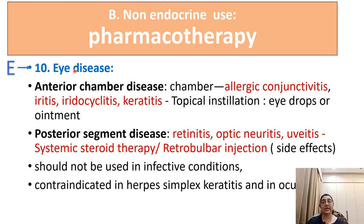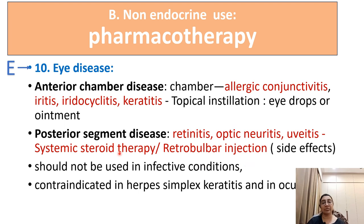'E' stands for eye disease. Anterior chamber diseases like allergic conjunctivitis, iritis, iridocyclitis, and keratitis can be treated with topical instillation of corticosteroid eye drops or ointment. For posterior segmental diseases like retinitis, optic neuritis, and uveitis, systemic steroid therapy or retrobulbar injection can be given. Corticosteroids are contraindicated in herpes simplex keratitis or ocular trauma, as they can perforate the cornea.